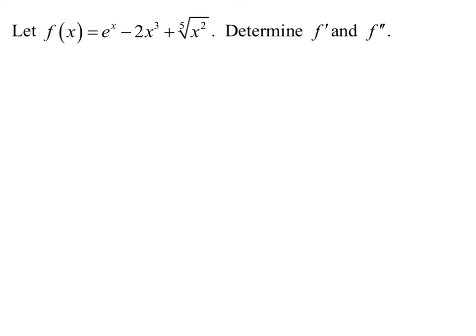In this example we have a function given and we want to determine the first and second derivatives. The first thing you want to analyze is if the function is in a good form in order to compute the derivative. It's important to notice that there are three individual terms: the first term, then we're subtracting a second term, and then adding a third term, which is great because we can take the sum and difference of individual terms separately.